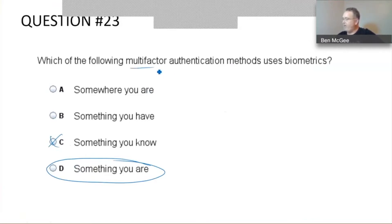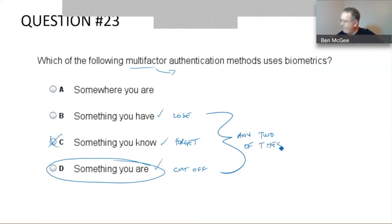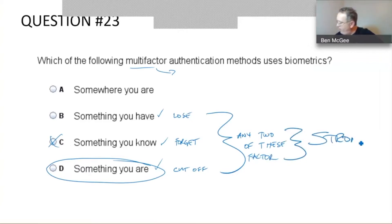So with multi-factor authentication, we think about something you know, something you have, or something you are. Another way to think of it: something you can forget, something you can lose, or something you can get cut off. Any two of these factors of authentication is considered strong authentication.